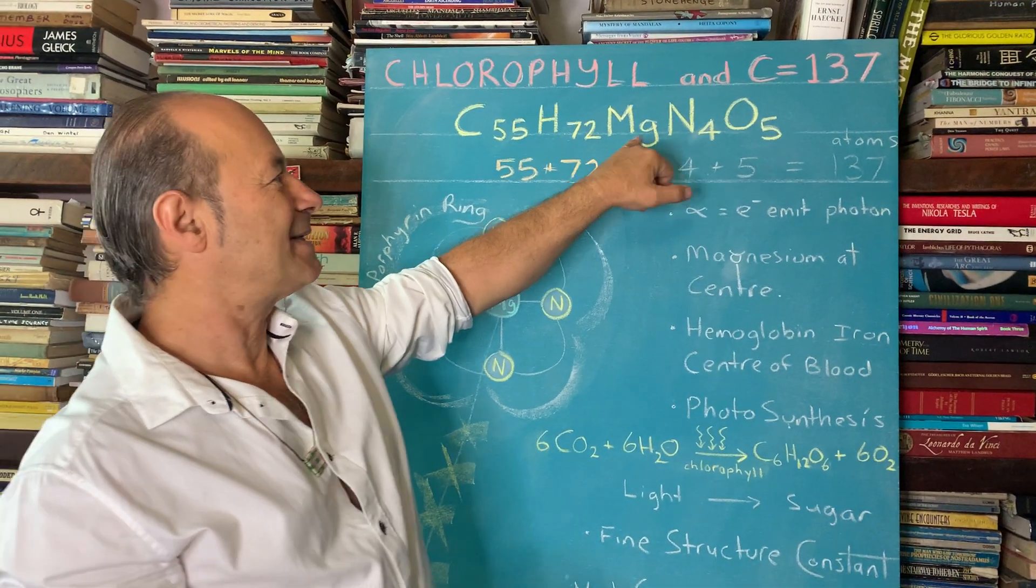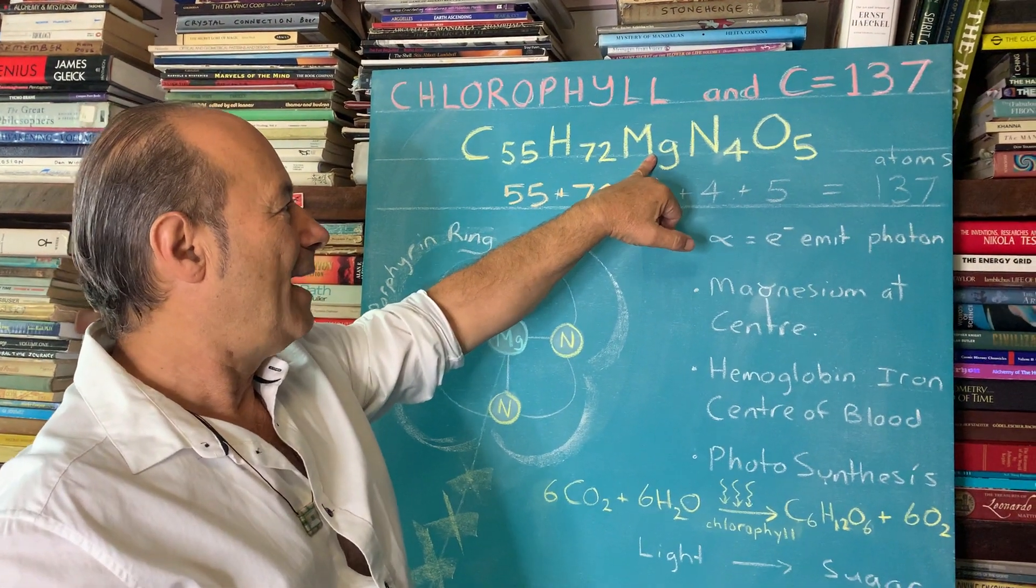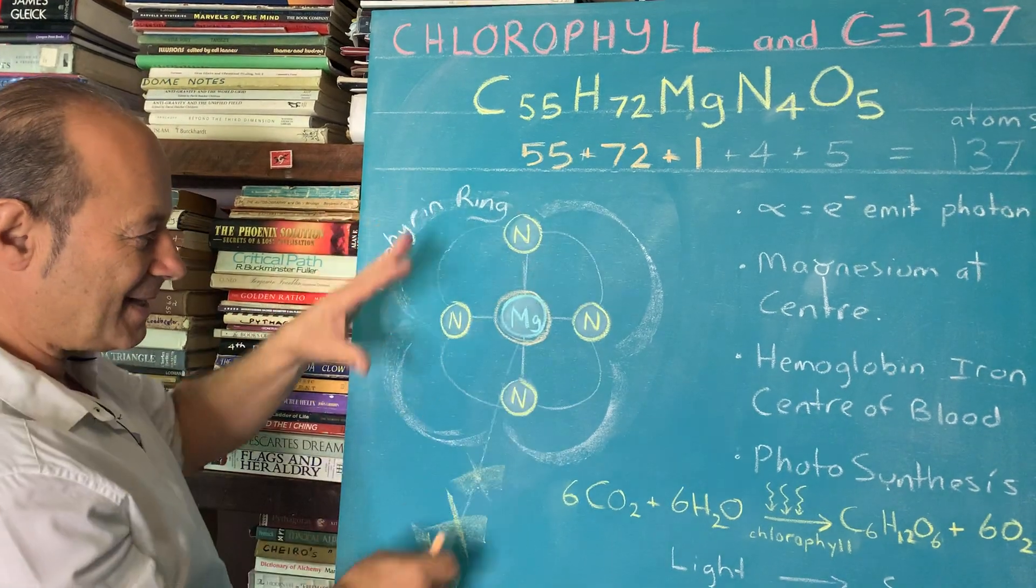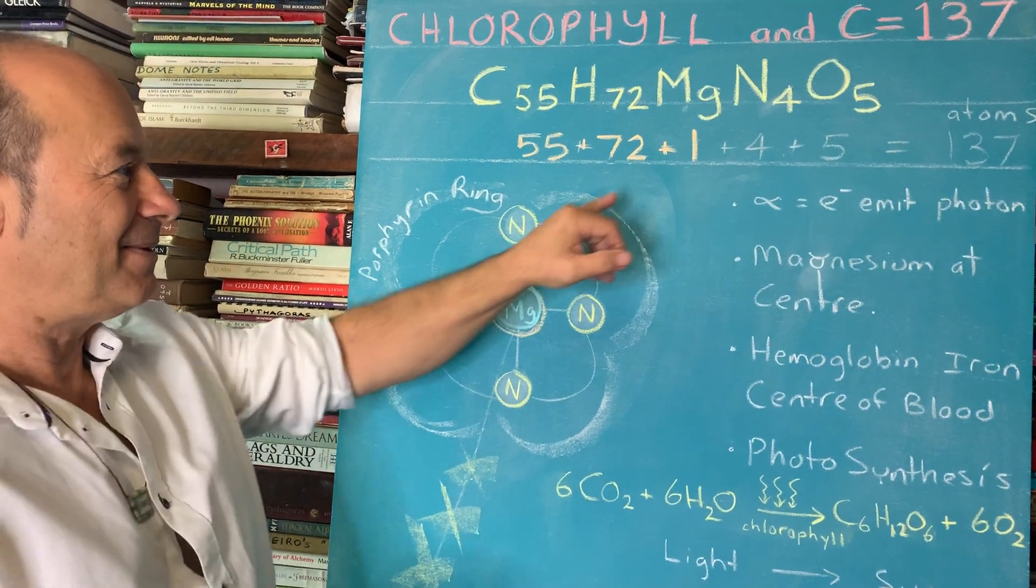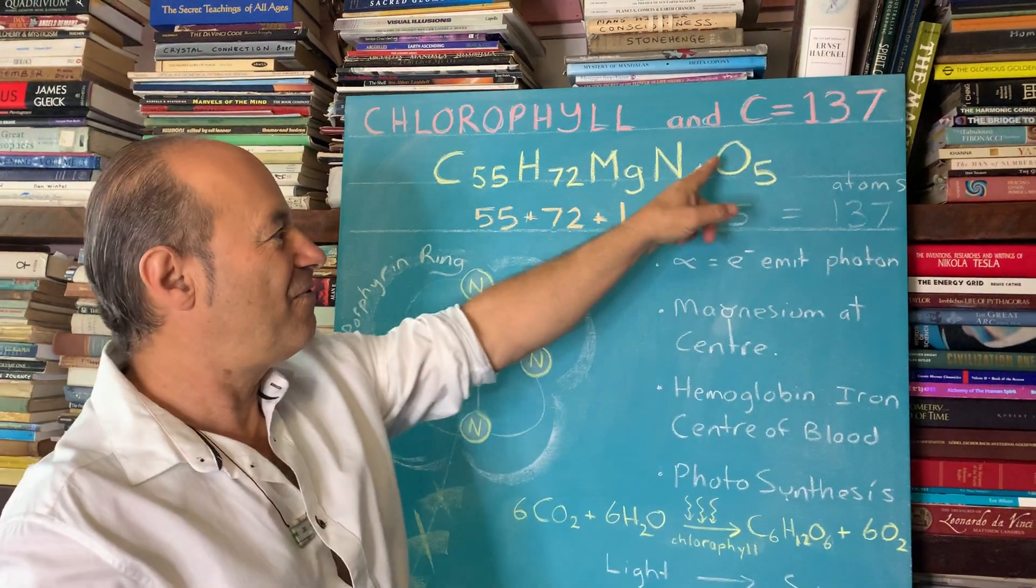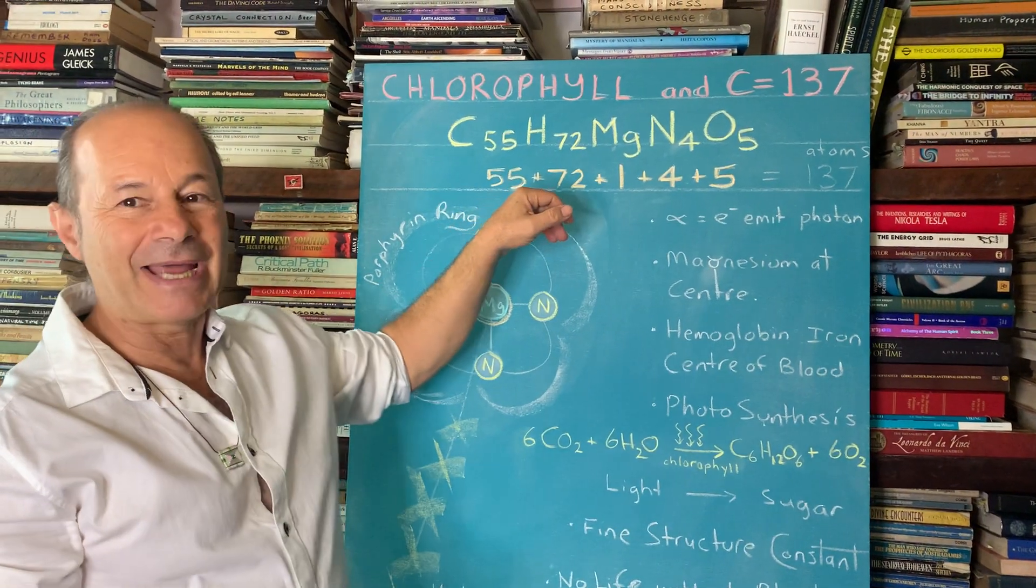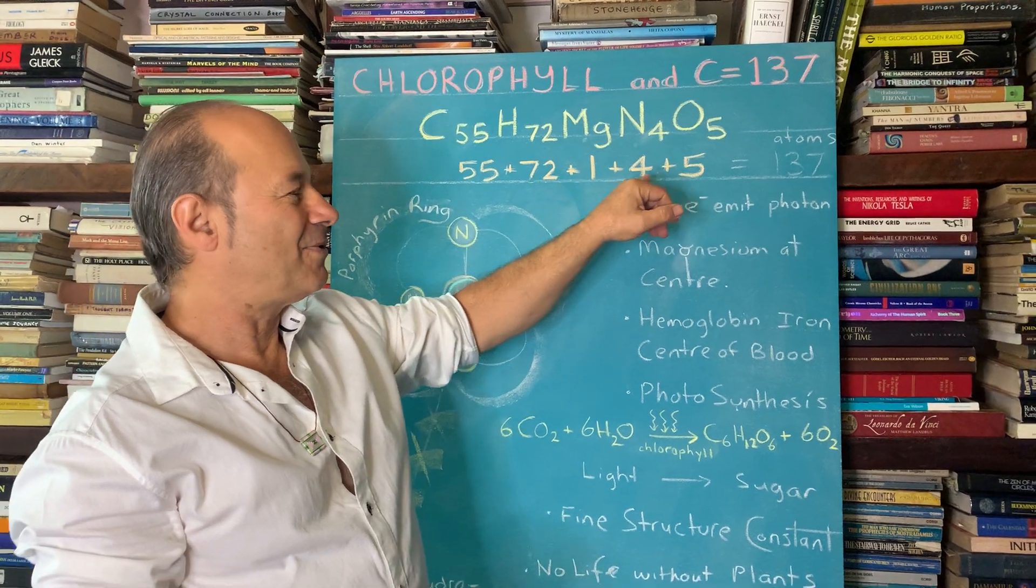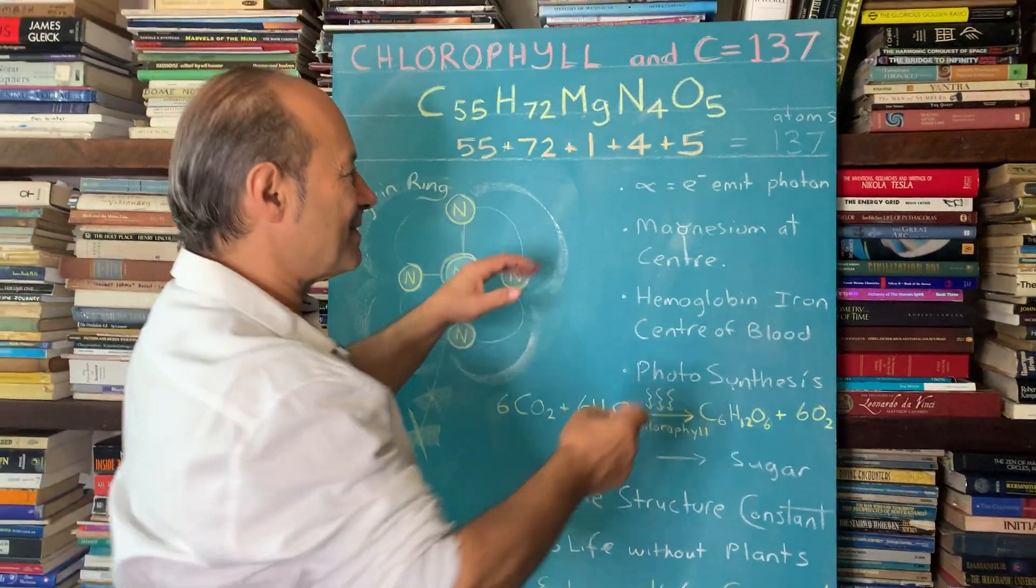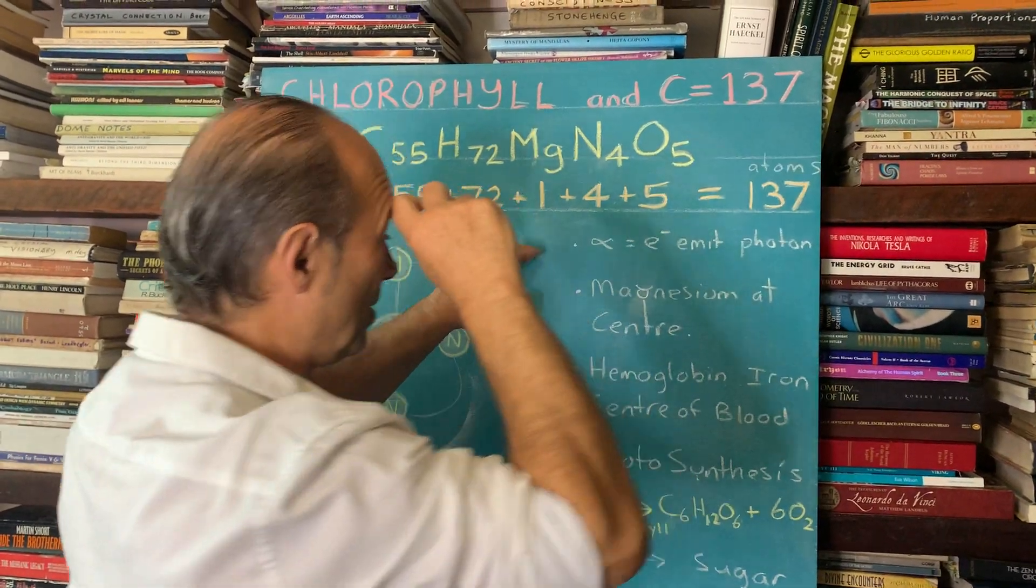Magnesium on its own doesn't have a one, but it's assumed that when you put magnesium, it's one atom. And magnesium is the central cell of this whole mandala that constitutes green blood. Nitrogen is 4, and O5 is 5 oxygen. And it just happens that when I added up all these individual atoms, 55 plus 72 plus 1 plus 4 plus 5, it happened to add up to that critically important number, 137. So chlorophyll has 137 atoms that constitute its molecule of life.